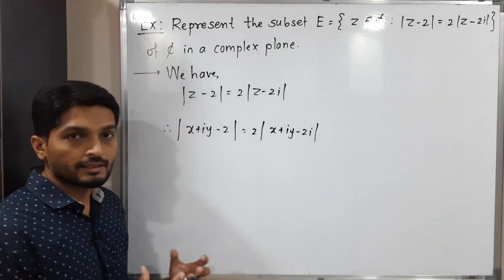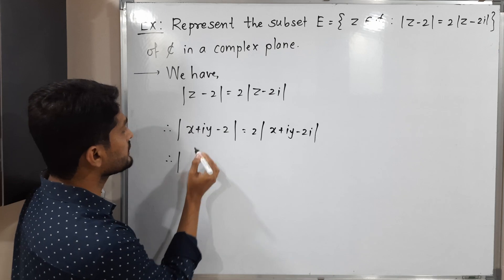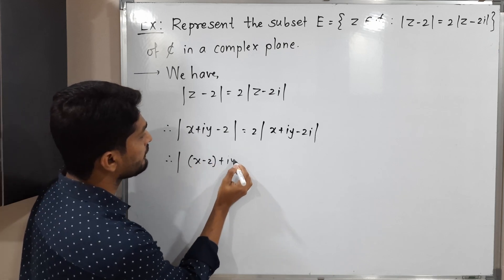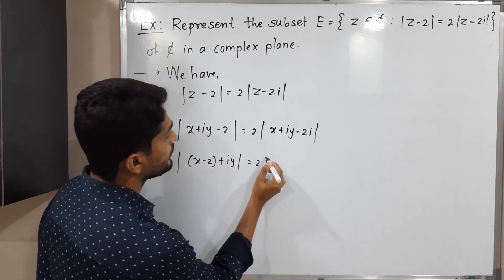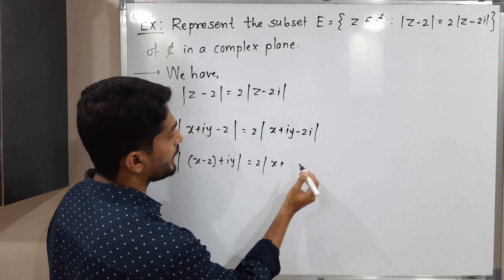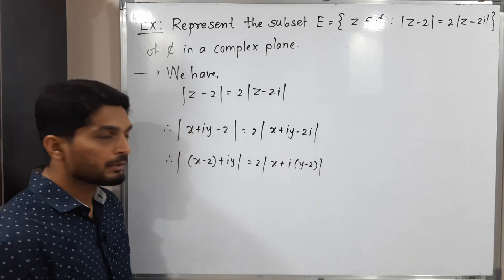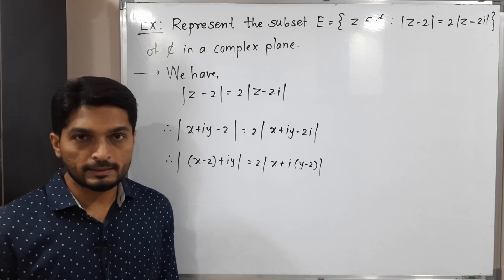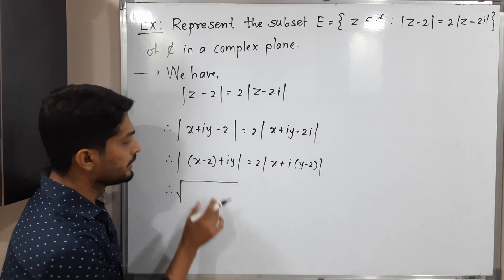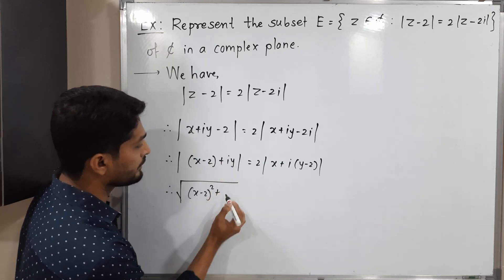Now let us collect real parts and imaginary parts. On the left side, real part is X minus 2 and imaginary part is iy. On the right side, real part is X only and imaginary part is iy minus 2i, taking i common gives y minus 2. We are familiar with the definition of mod, so let us apply it: square root of the square of the real part plus the square of the imaginary part.